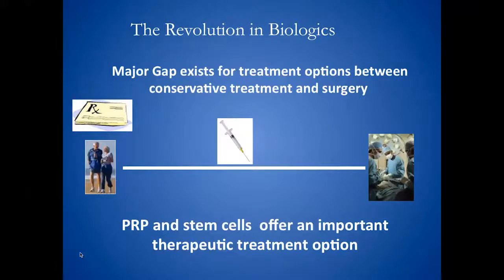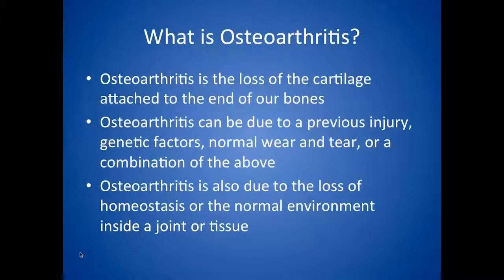First, a discussion about osteoarthritis: basically it is a loss of cartilage attached to the end of our bones — identical to what you see when you break a chicken leg and thigh apart, that yellow gristly material. It wears off much like paint flaking off a ceiling over time, or sometimes more dramatically like a chunk of plaster falling out. This can be due to a previous injury, normal wear and tear, genetics, or a combination.